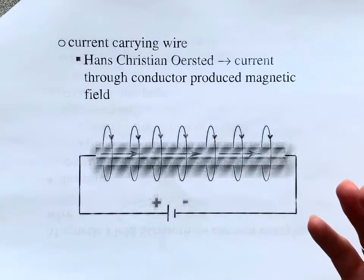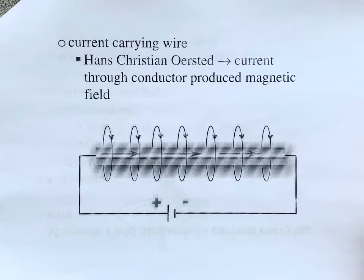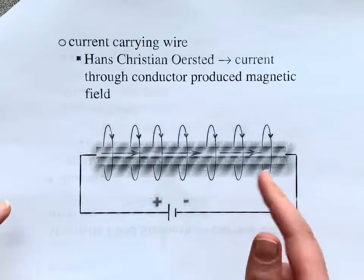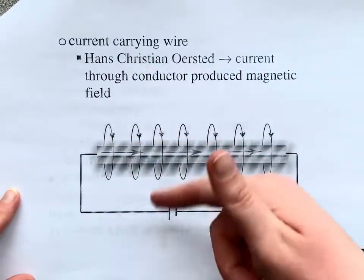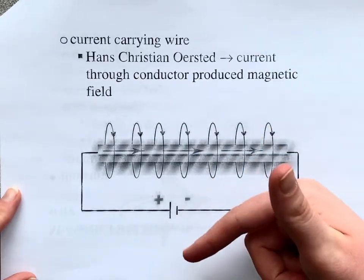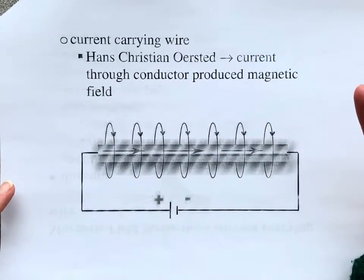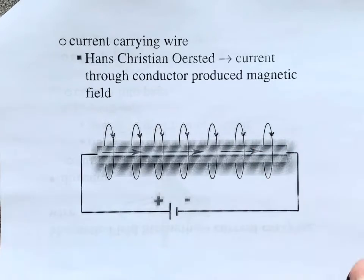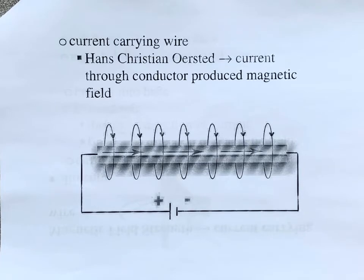So what we're going to do today is figure out the direction of the magnetic field. When we have a current-carrying wire, the magnetic field goes in a circle around it. We need to figure out why it goes this way versus another way — which direction is the magnetic field going to go when we have a current-carrying wire?